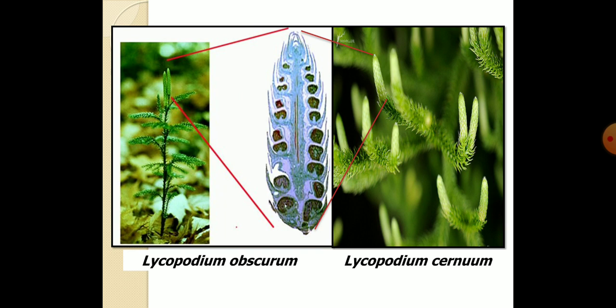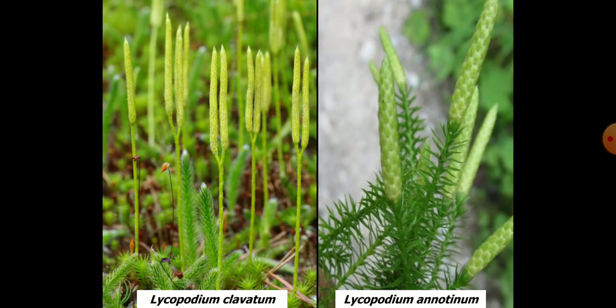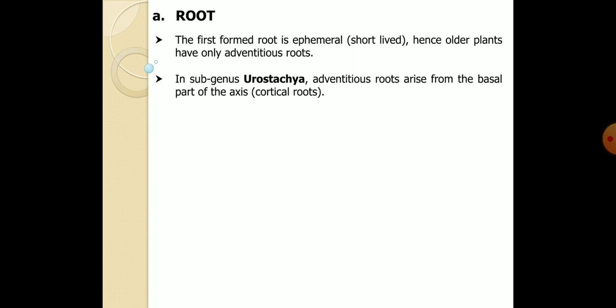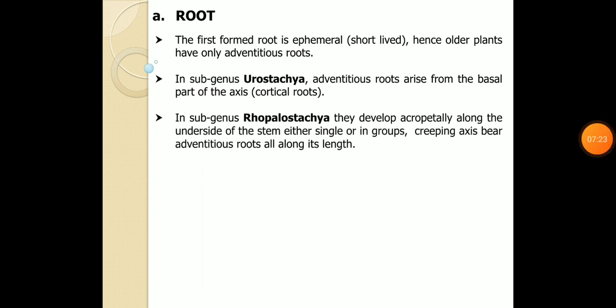The picture shows Lycopodium obscurum and Lycopodium cernuum; the tip of the sporophyte consists of long, pale yellowish sporophyll structures. The center picture shows a cross-section of the sporophyte with spores. Also shown are Lycopodium clavatum and other species. This concludes the discussion on general characteristics, morphology, and habitat of Lycopodium.